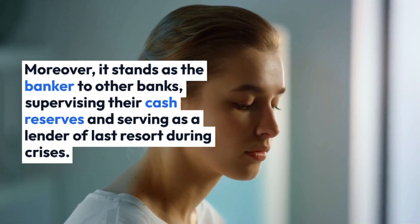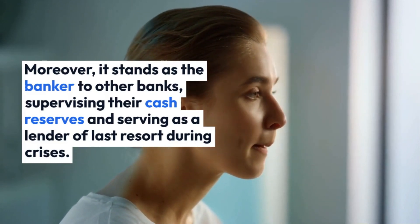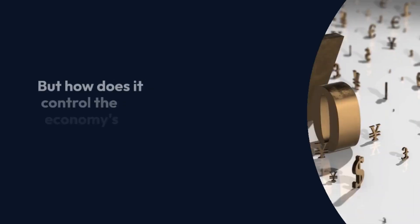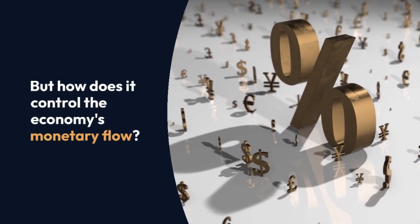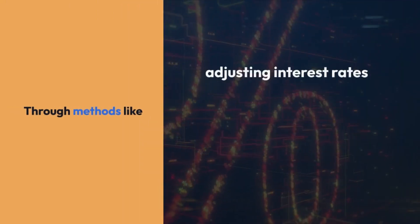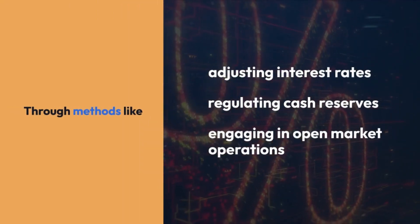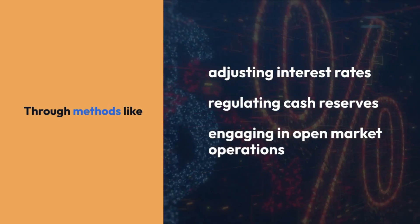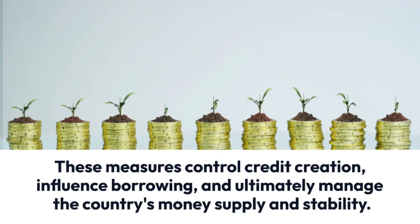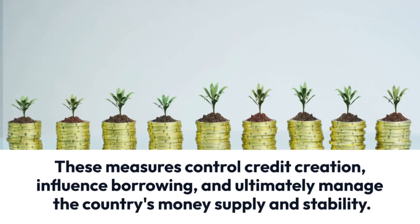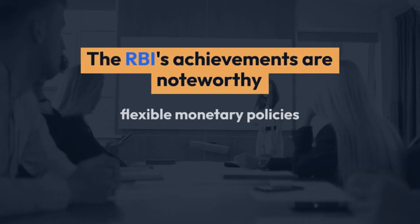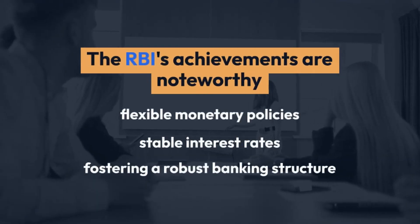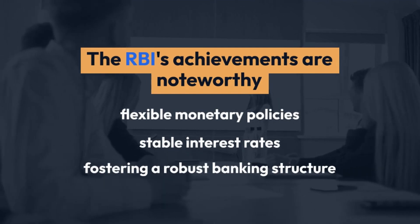But how does the RBI control the economy's monetary flow? Through methods like adjusting interest rates, regulating cash reserves, and engaging in open market operations. These measures control credit creation, influence borrowing, and ultimately manage the country's money supply and stability.